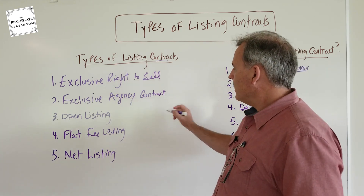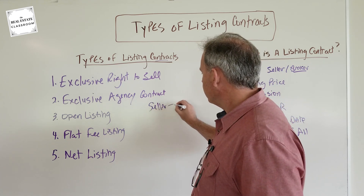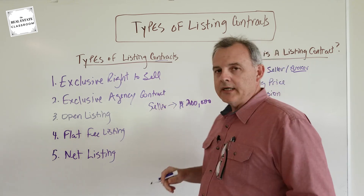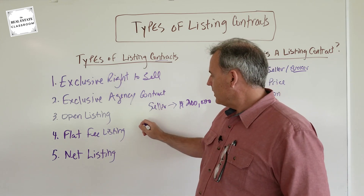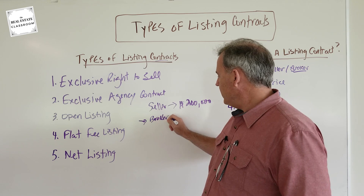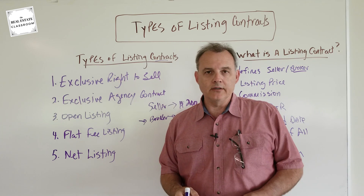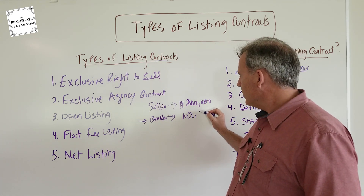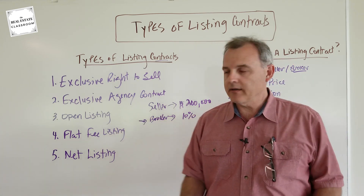Here's an example: let's say the seller wants a net of $200,000 — they want a check at closing for $200,000. And let's say the broker decides this is a unique deal and wants to make at least 10% commission. So if the seller is going to get $200,000, how much more will need to be charged to cover that 10% commission?